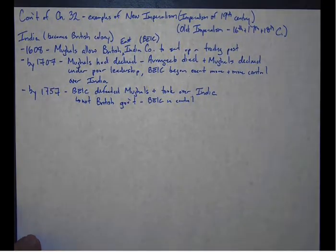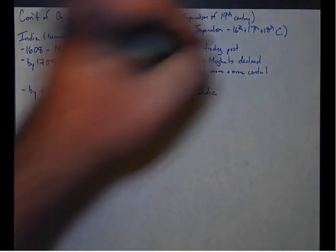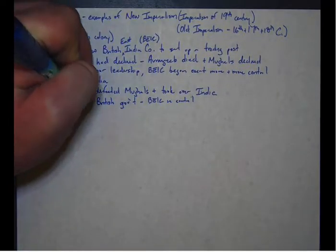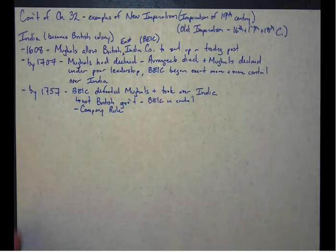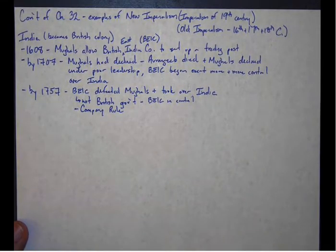So we get a period of time called Company Rule. The British East India Company is now pretty much the government of India.